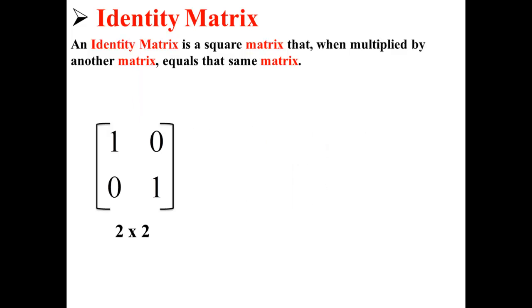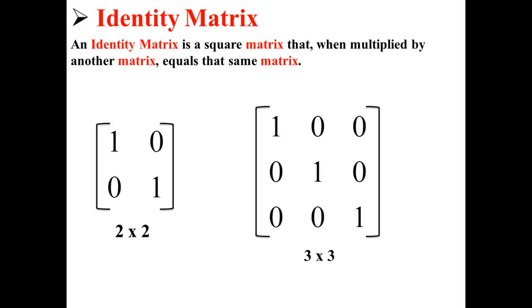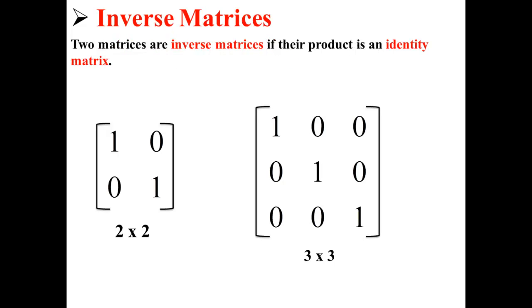Here we have the 2 by 2 identity matrix, and here we have the 3 by 3 identity matrix. Two matrices are inverse matrices if their product is an identity matrix.